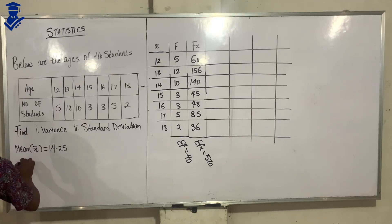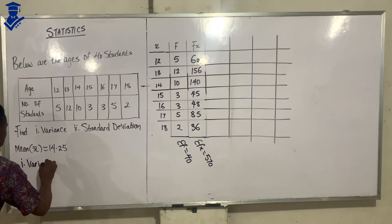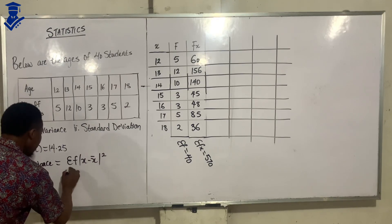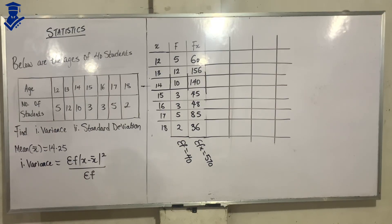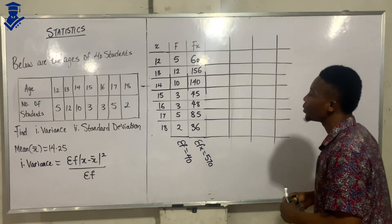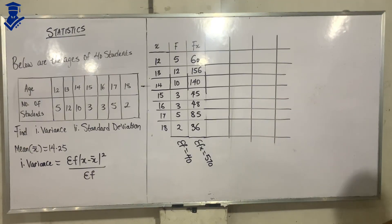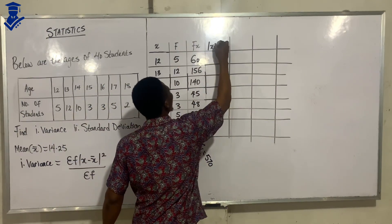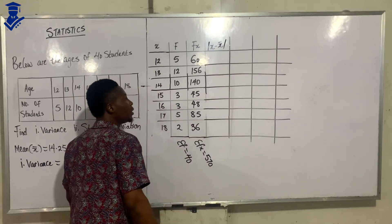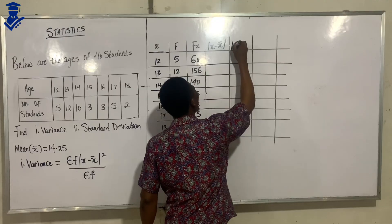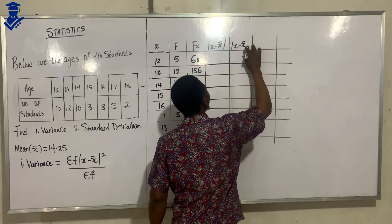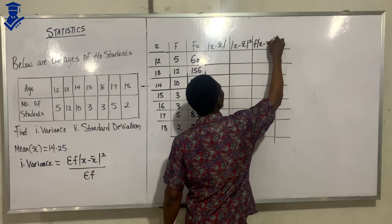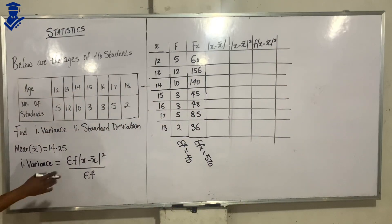Now, the formula for variance is: summation of f times (x minus x̄) squared, over summation of f. That's the formula for variance. Our table must have the x minus x̄ column, the x minus x̄ squared column, and finally f multiplied by (x minus x̄) squared.